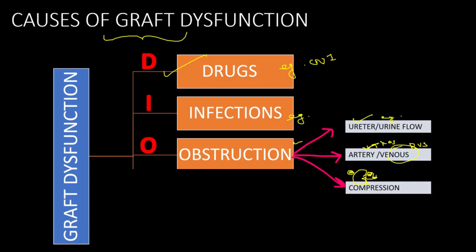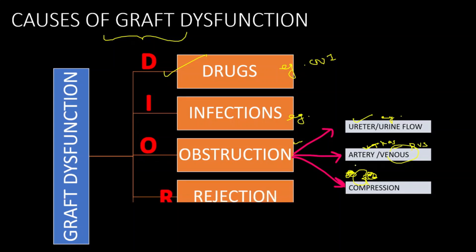There might also be compression of the graft by an external collection — a blood leak, clot, seroma collection, or any external mass compressing the graft. The next cause is R — Rejection. Very important. Either antibody-mediated rejection or cell-mediated rejection.